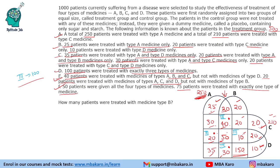This is how we complete the Venn diagram. Now let us answer the questions. First question: how many patients were treated with medicine type B? Adding all B values: 150 plus 50 is 200, plus 30 is 230, plus 10 is 240, plus 40 is 280, plus 20 is 300, plus 20 is 320, plus 20 is 340. So 340 patients were treated with medicine type B.